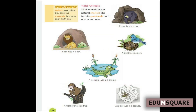Some animals live in natural shelters. Shelters are the places where living things live. Such animals are known as wild animals. Their shelters include forests, grasslands — large areas covered with grass — and seas or oceans. Can you name some natural shelters? Forest, grassland, oceans and seas — very good!